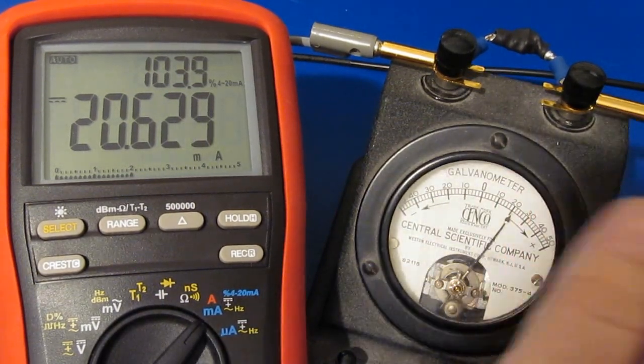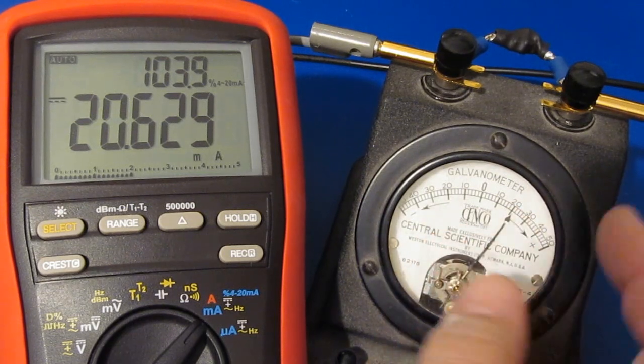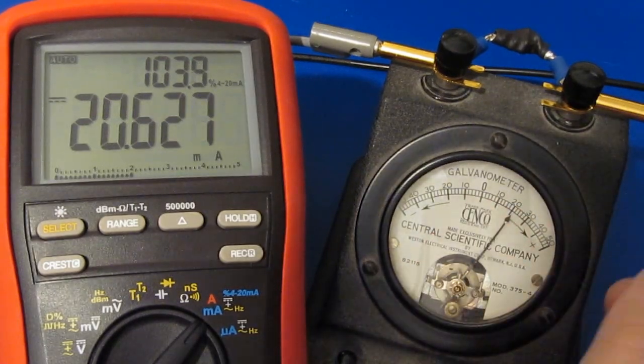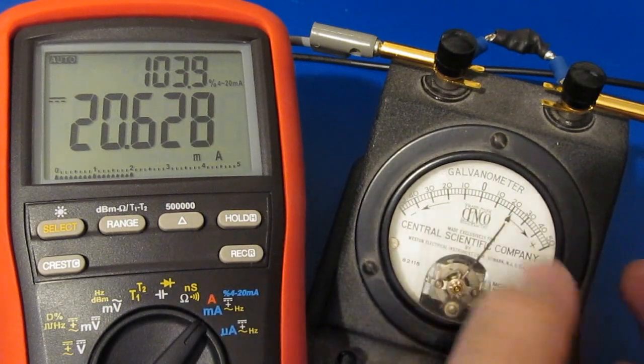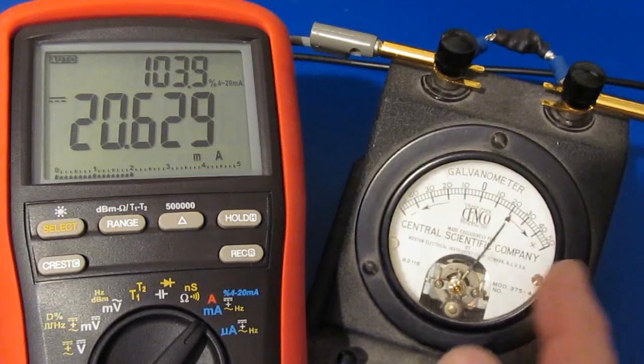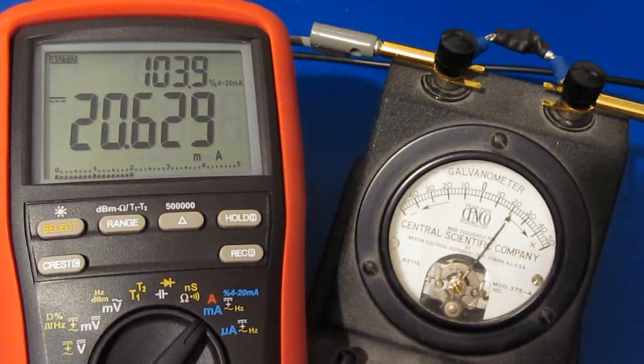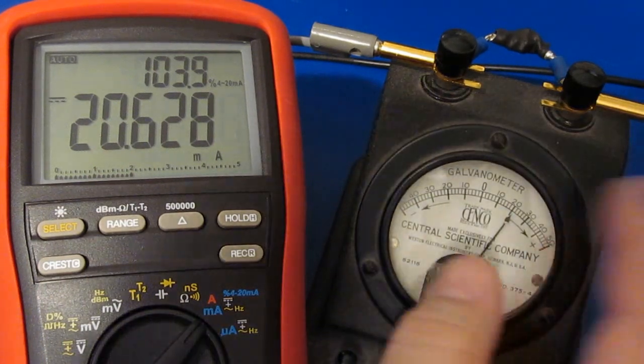We're reading a negative current this direction, and if I flip the two leads, now we can see it's reading on a positive scale. To look at current signals in the 4 to 20 milliamp range really isn't a problem for even an antique meter like this. It's just a question of setting up a shunt to get the scaling that you want.